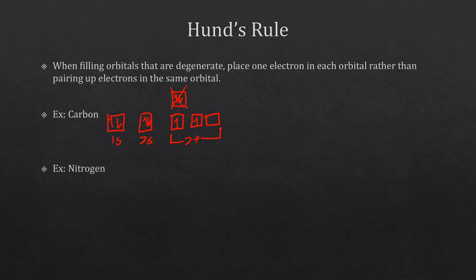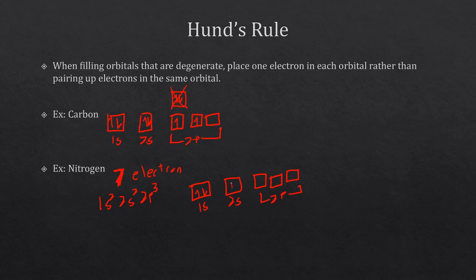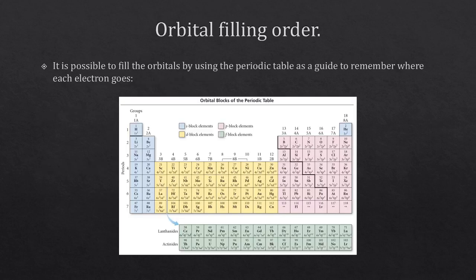Let's look at one more example with nitrogen. Nitrogen has seven electrons, so it's 1s2 2s2 2p3. We've got our 1s box, our 2s box, and our 2p boxes: one, two, three, four, five, six, seven. If you were to go on to oxygen, which has eight electrons, you would have run out of empty boxes, so you'd start pairing them — adding down-arrow electrons representing spin minus one-half into the boxes.